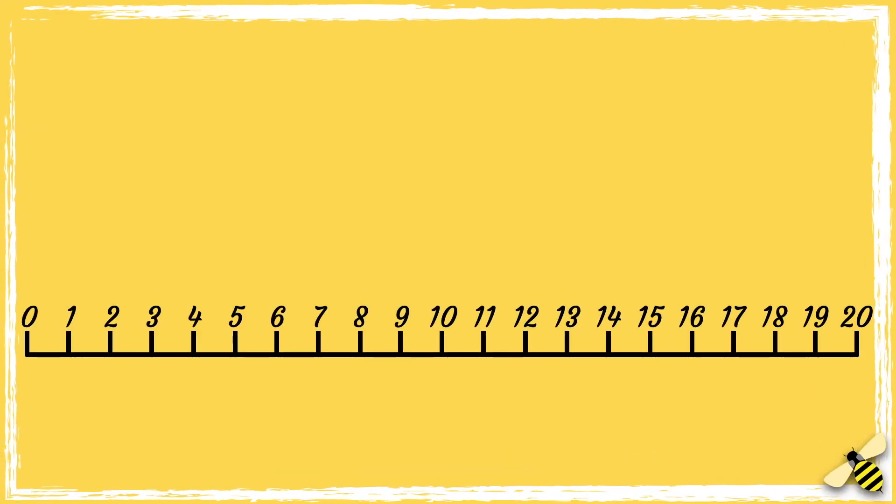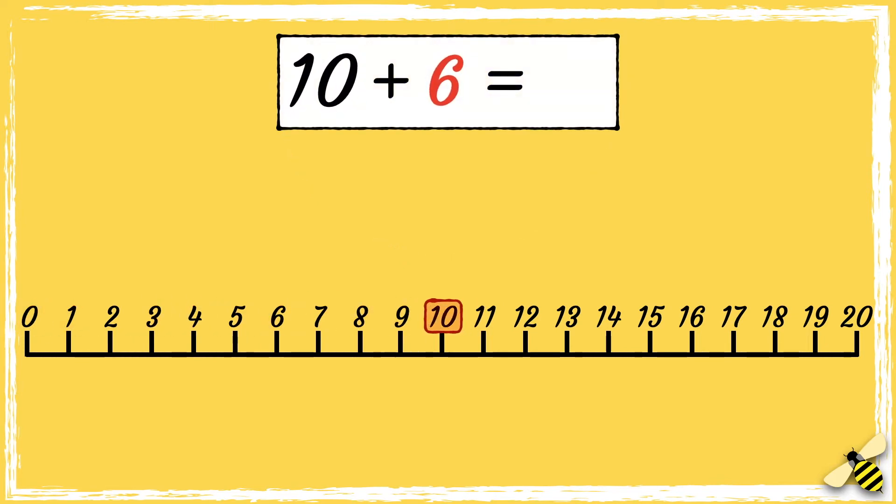Let's have a look at another one. 10 add 6. We start from 10, and we're adding 6, so we need to jump 6 digits to the right.